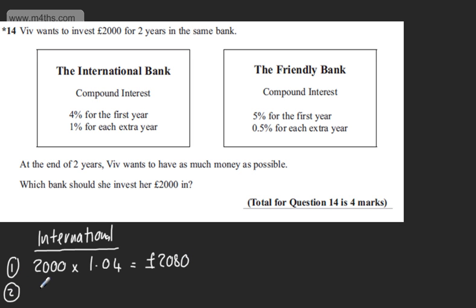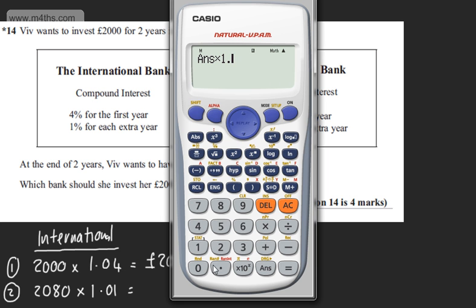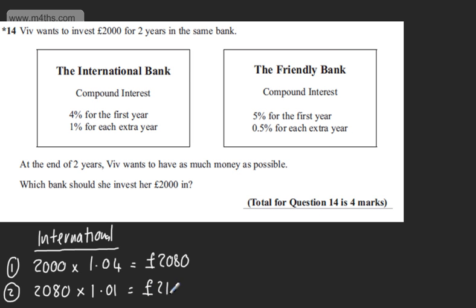So after two years, we're going to have 2,080 multiplied by 1.01. That now is the multiplier for 1% interest. So working this out, multiplying this by 1.01, that's going to give me now £2,100 and 80 pence. So £2,100 and 80 pence.